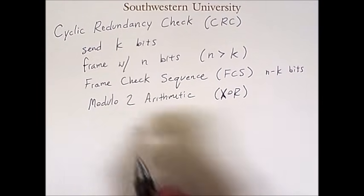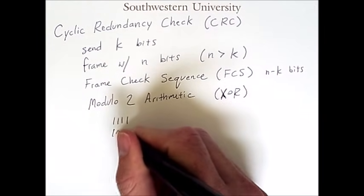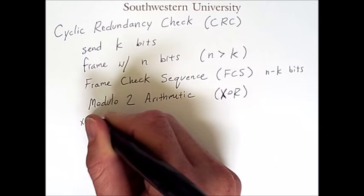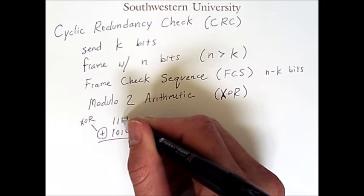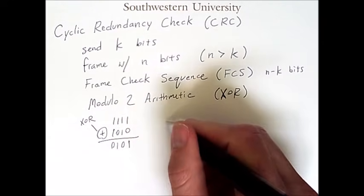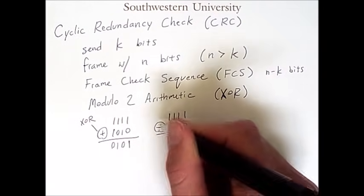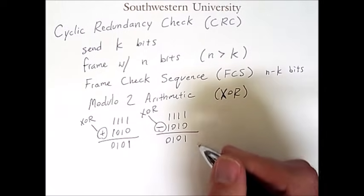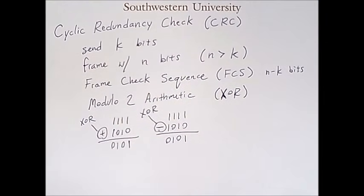Here are some quick examples of modulo-2 arithmetic. What's interesting about it is that addition and subtraction are actually the same. If I'm adding two values, I really just interpret this as an XOR operation. The exclusive OR of different values is 1, and the exclusive OR of the same value is 0. So this comes out to be 0, 1, 0, 1. And if I do the same operation with a minus, we also interpret the minus as an XOR, so we get the same result: 0, 1, 0, 1. In a moment we'll be doing multiplication and division.